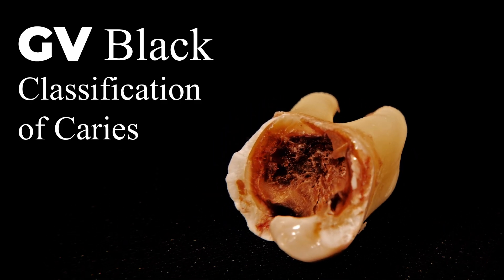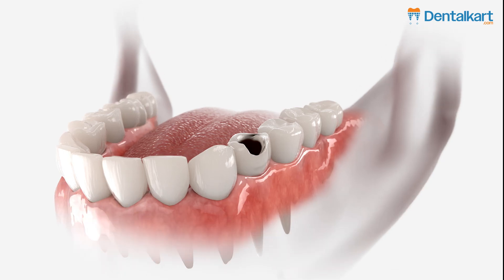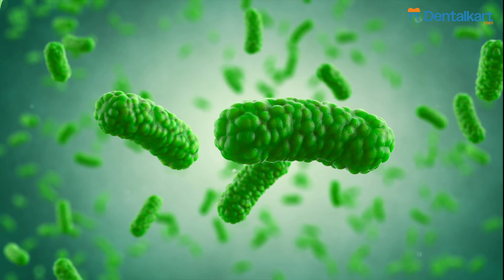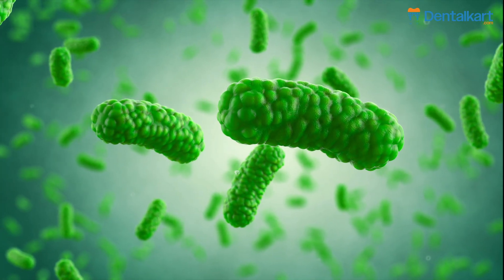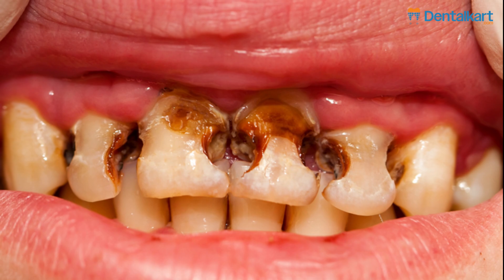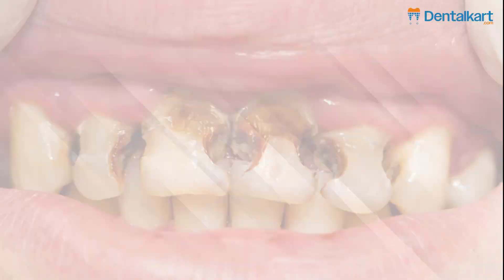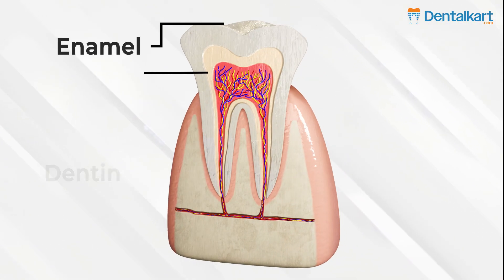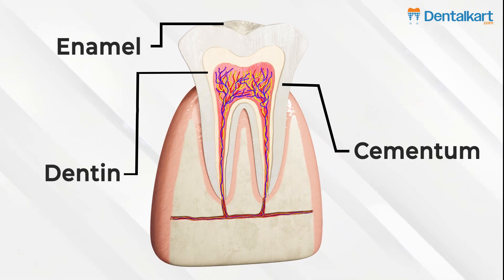Black classification of caries. Tooth decay, also known as a cavity, is a bacterial infection that leads to the breakdown of the hard tissues of the teeth, including enamel, dentin, and cementum.